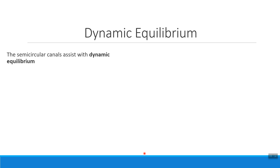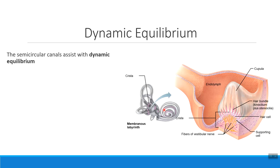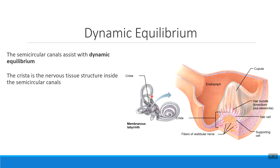Dynamic equilibrium doesn't use the saccule and utricle. It uses the three parts of the internal ear called the semicircular canals, located above and to the side of the saccule and utricle. The semicircular canals come in three different orientations, and inside each one we have a membrane called the crista. The crista is essentially the semicircular canal's version of the macula — where we had the macula in the saccule and utricle, we have the crista in each semicircular canal.